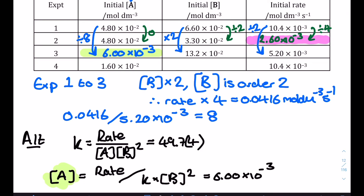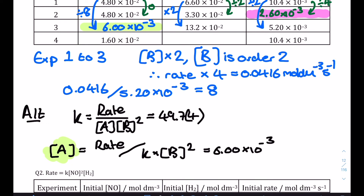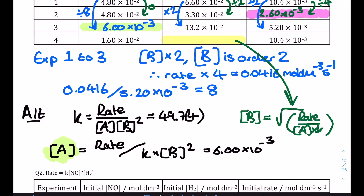We can use this same method for the remaining gap in the table — the initial concentration of B in experiment four. Rearranging to make [B] the subject and taking the square root (because B is second order): [B] equals the square root of rate divided by [A] times k. Inputting experiment four's rate and concentration of A, along with our constant k, gives a value for the initial concentration of B of 0.114 mol dm⁻³.